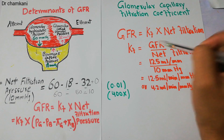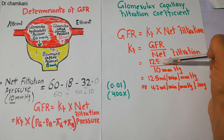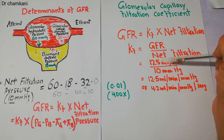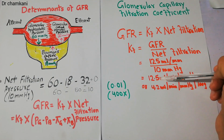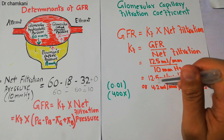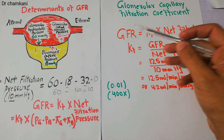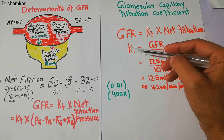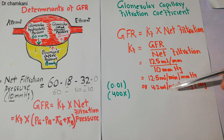KF equals GFR divided by net filtration pressure. GFR is 125 ml per minute and net filtration pressure is 10 mmHg, so 125 divided by 10 gives 12.5 ml per minute per mmHg — and this value is for both kidneys combined. If we calculate the filtration coefficient per 100 grams of kidney tissue, it turns out to be 4.2 ml per minute per mmHg per 100 grams of kidney.